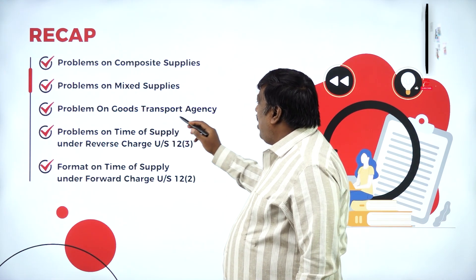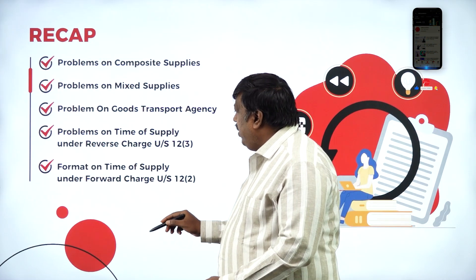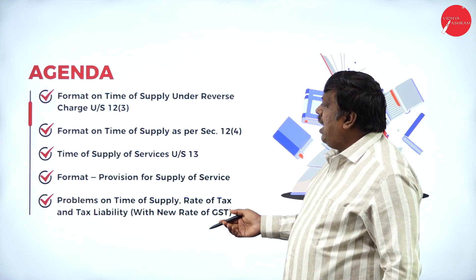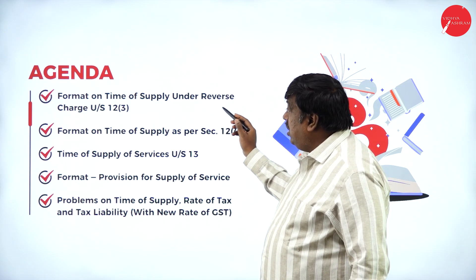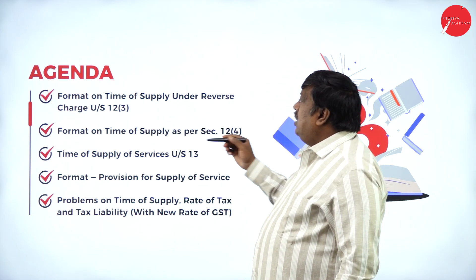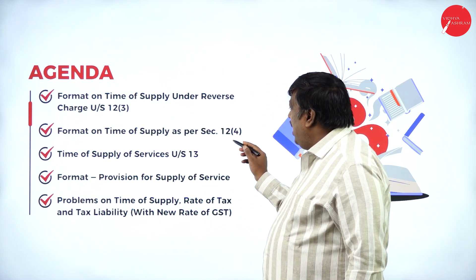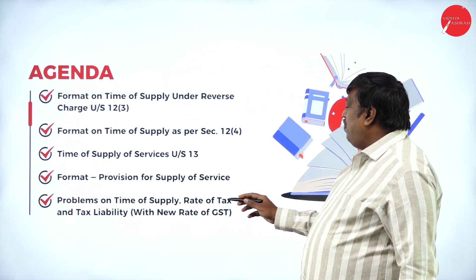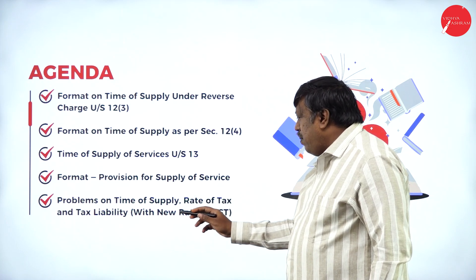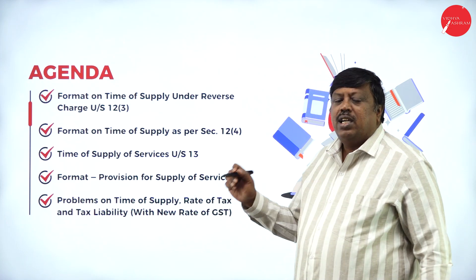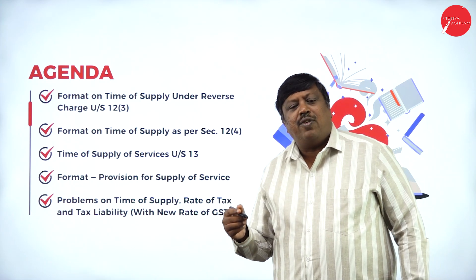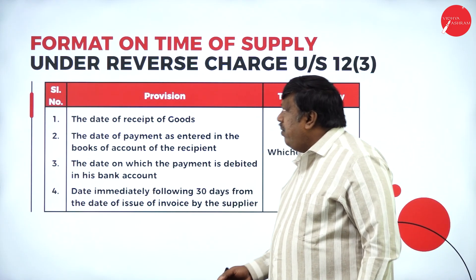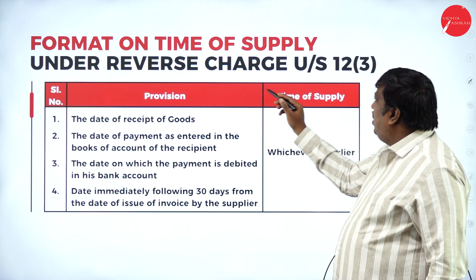In our previous session we covered problems on composite supplies, mixed supply, goods transport agencies, time of supply under reverse charge and forward charge. In today's session we're going to cover the format of time of supply under reverse charge under Section 12 sub-clause 3 and 12 sub-clause 4, under Section 13, and problems on time of supply, rate of tax, and tax liability with new rate of GST as per the GST Act of 2017.